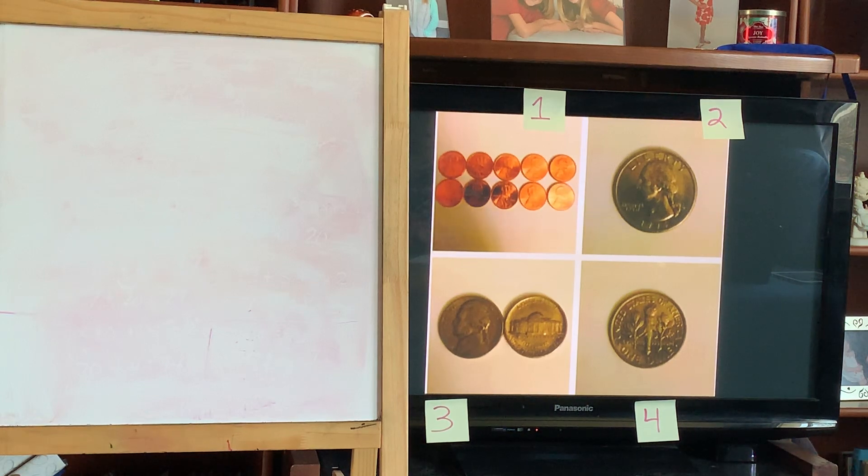Jamie, what were you thinking why number one doesn't belong? Because there is a bunch of coins and the other ones there's only like two or one coin. Okay so the bigger pile. Allie? I just thought because number one the pennies are brown and the rest are silver. Okay, all right, so the girls both agreed on number one and they thought about the color and the amounts there.